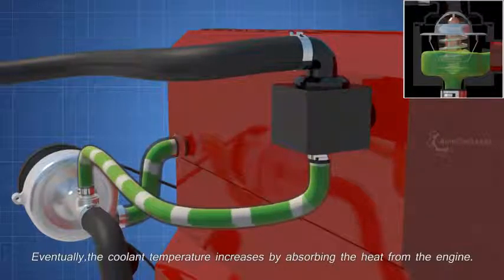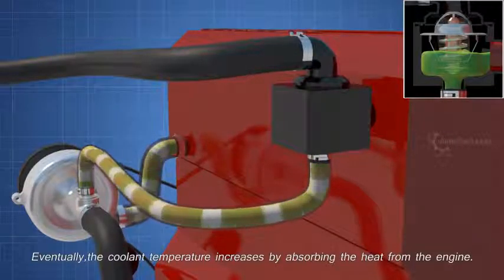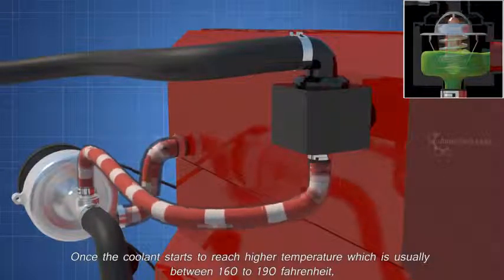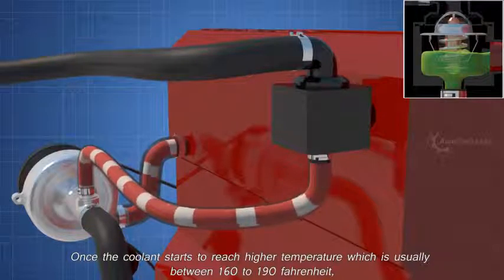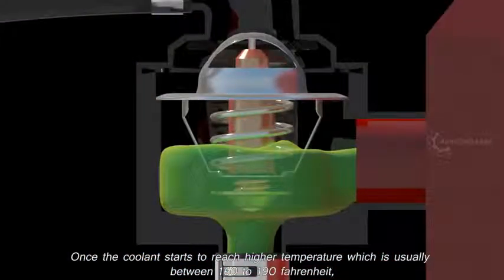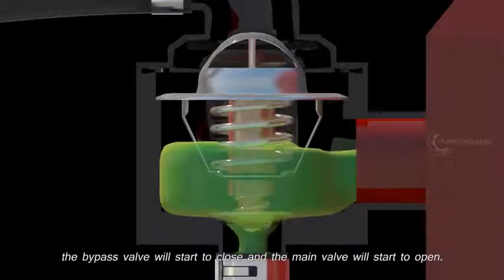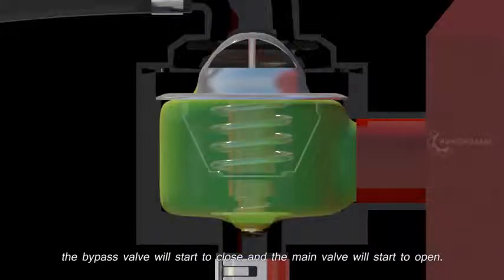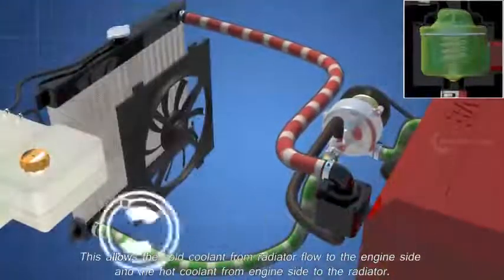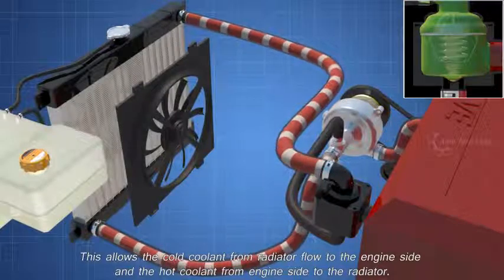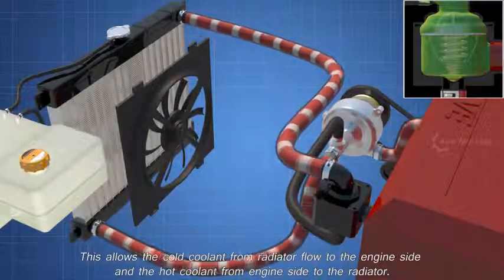Eventually, the coolant temperature increases by absorbing the heat from the engine. Once the coolant starts to reach higher temperature, which is usually between 160 to 190 Fahrenheit, the bypass valve will start to close and the main valve will start to open. This allows the cold coolant from radiator flow to the engine side and the hot coolant from engine side flow to the radiator.